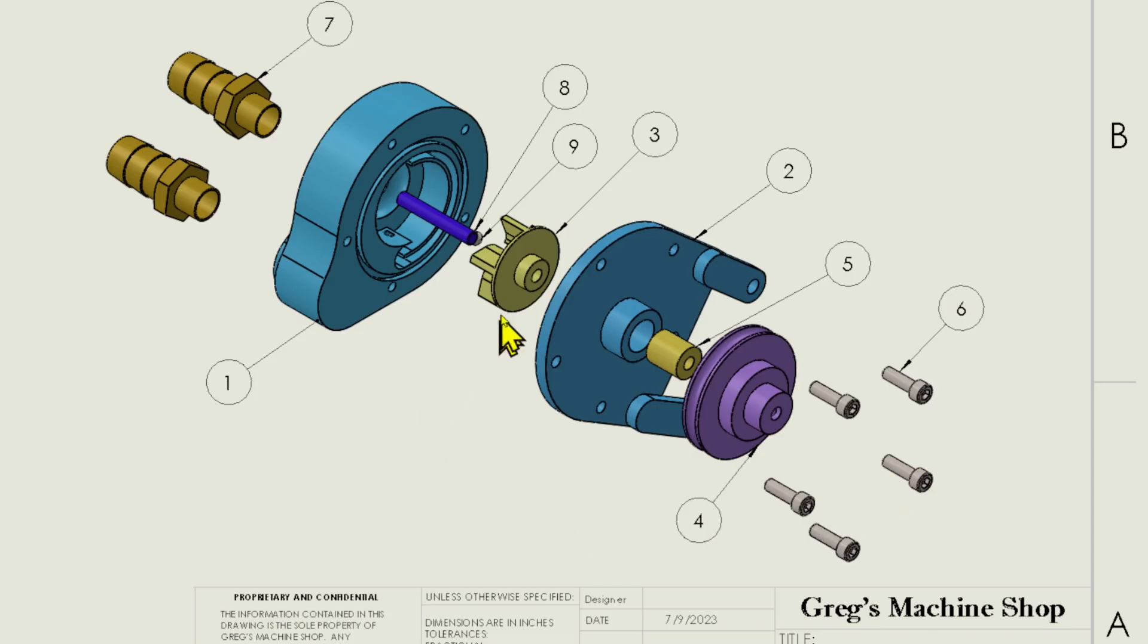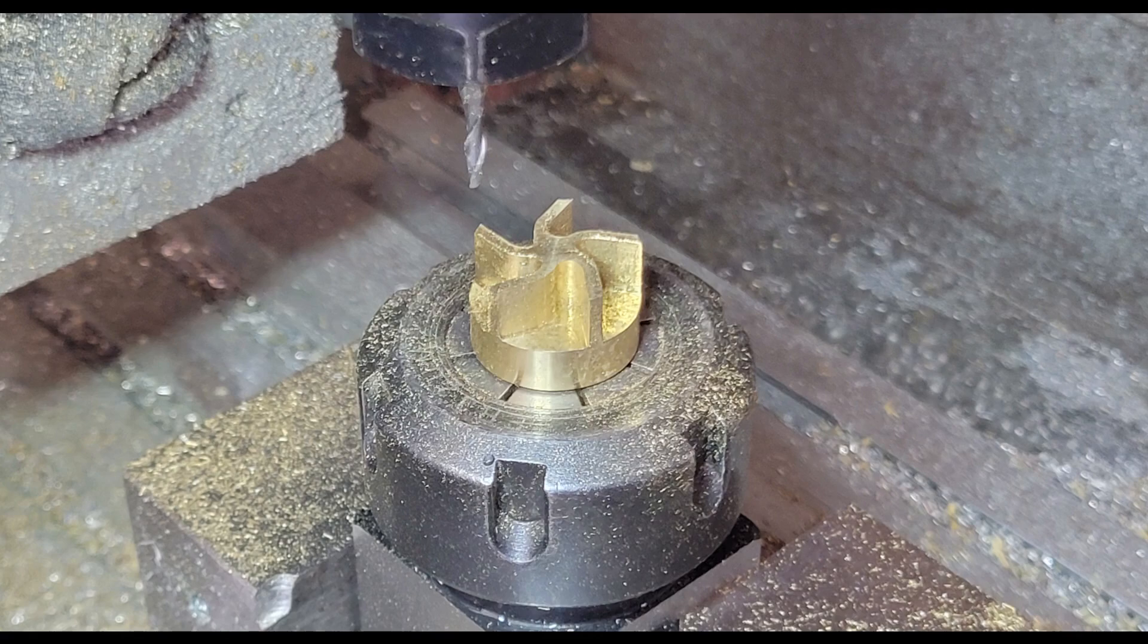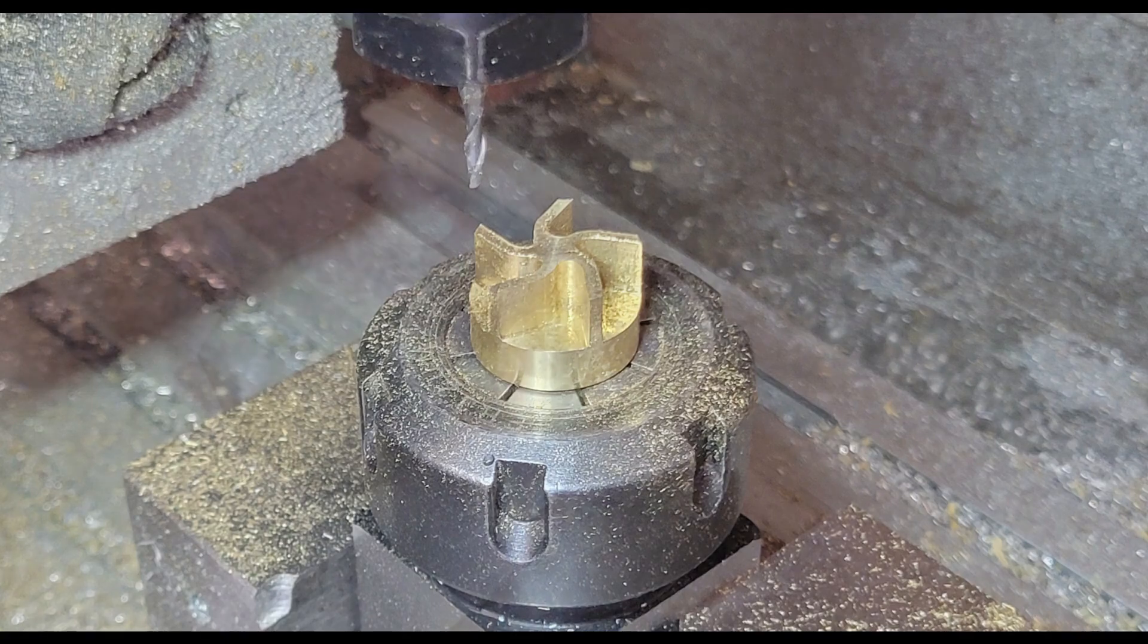Let's take a look at machining this impeller first. To machine the impeller, I started with a 7/8 inch diameter brass rod, faced the end on my lathe, then machined the profile on my CNC router.